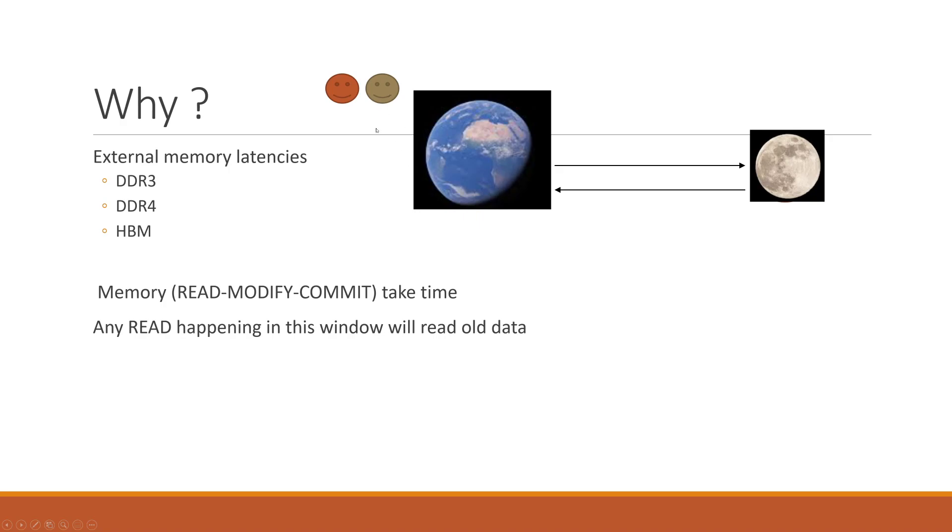Now imagine if a second person right behind wants to reserve Lord of the Rings as well. What happens is that the second person comes in, sits at the next terminal, and it'll take a while before the first person completes the read-modify-commit cycle for reserving the book. If the second person comes in and sits down at the next terminal, that reservation may not work because that read-modify-write and commit cycle hasn't completed yet for the first person. If you try to interfere in the middle, you will read the wrong values. So that's the fundamental problem.